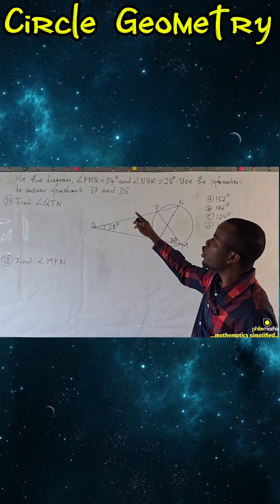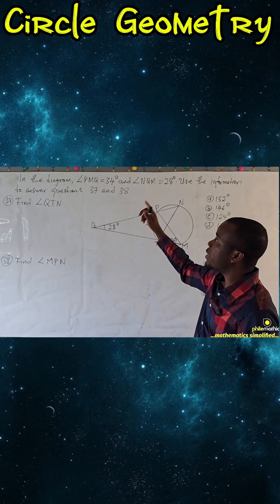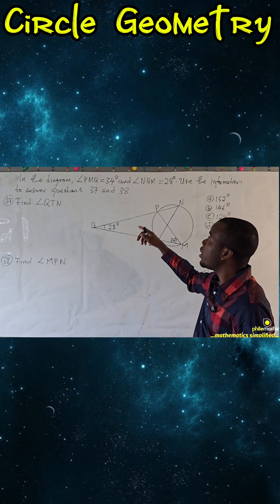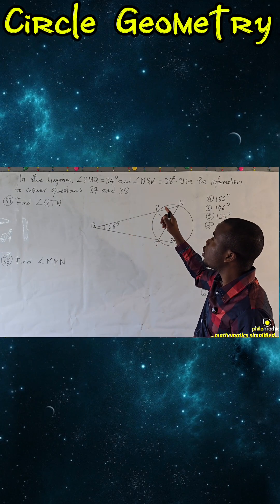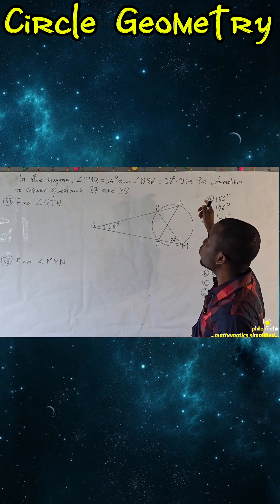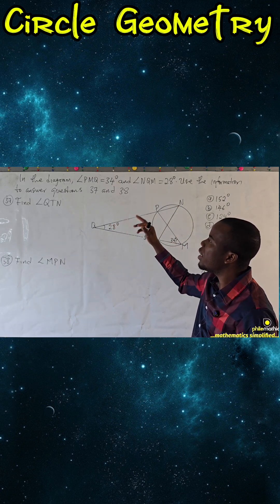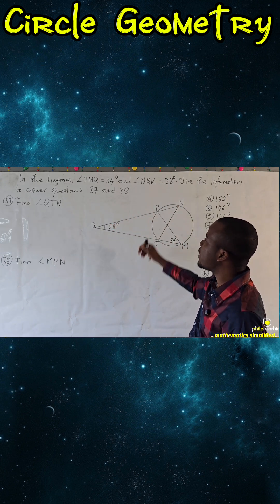In this diagram, angle PMQ is 34 degrees and angle NQM is 28 degrees. Use the information to answer questions 37 and 38.